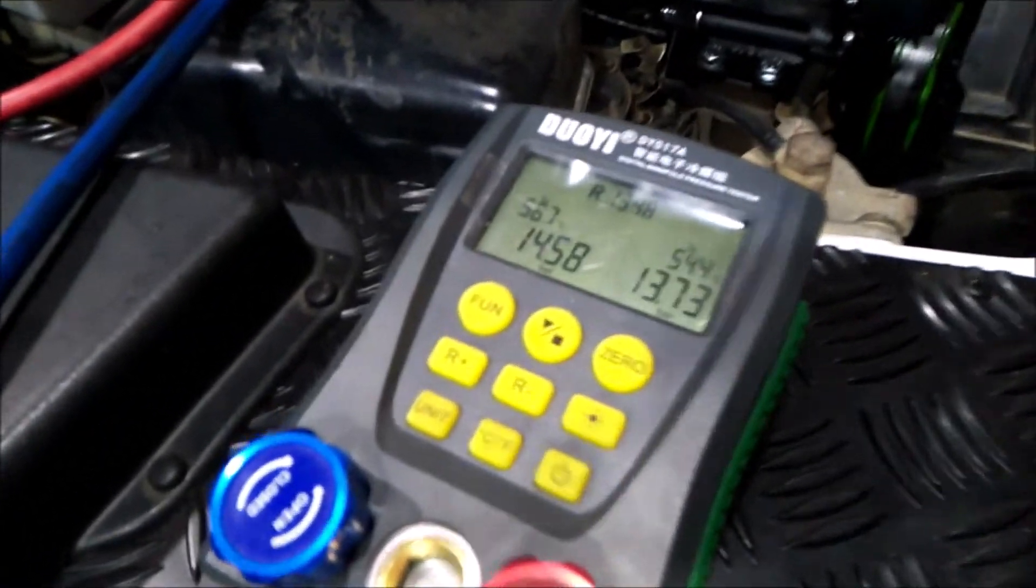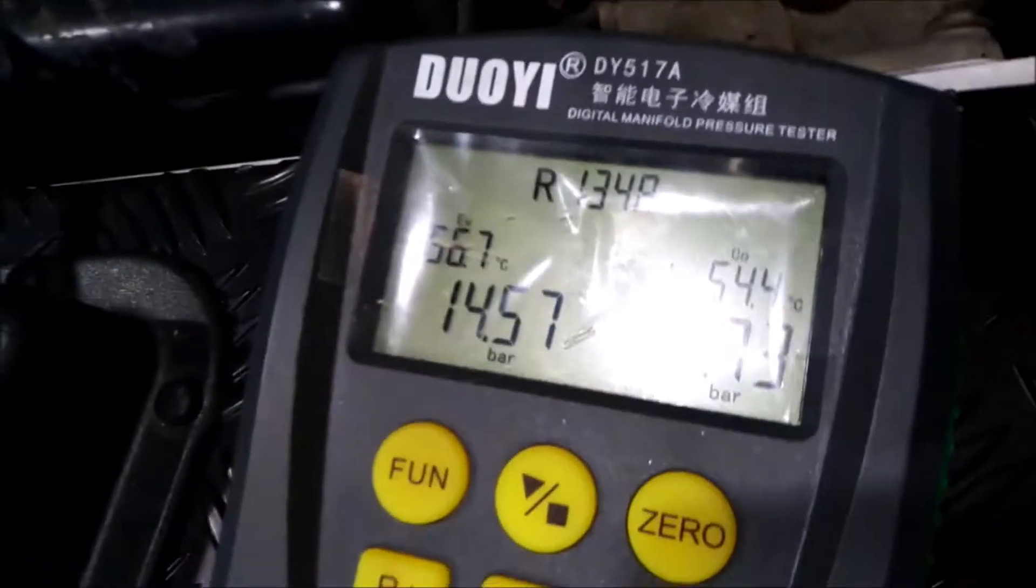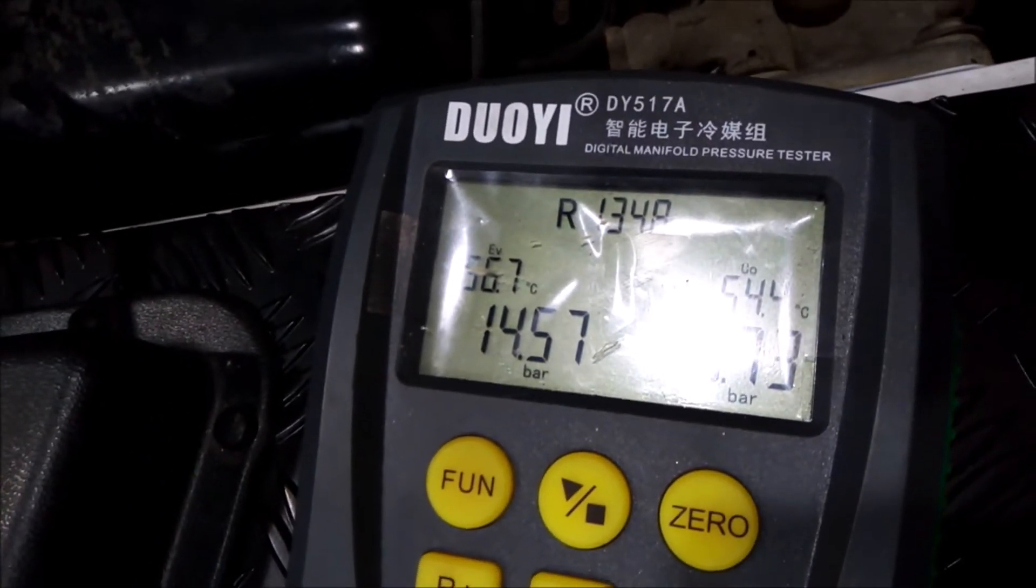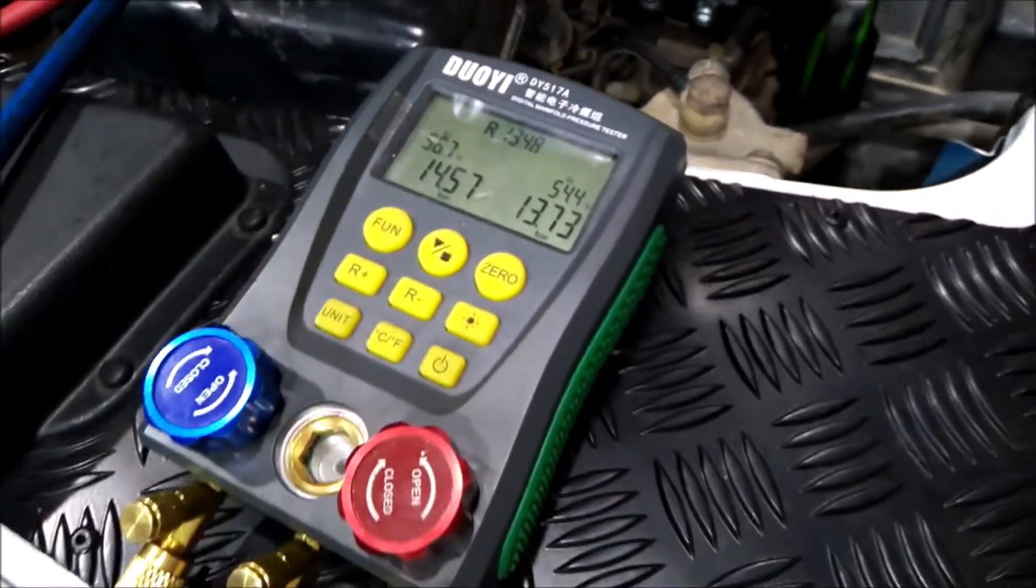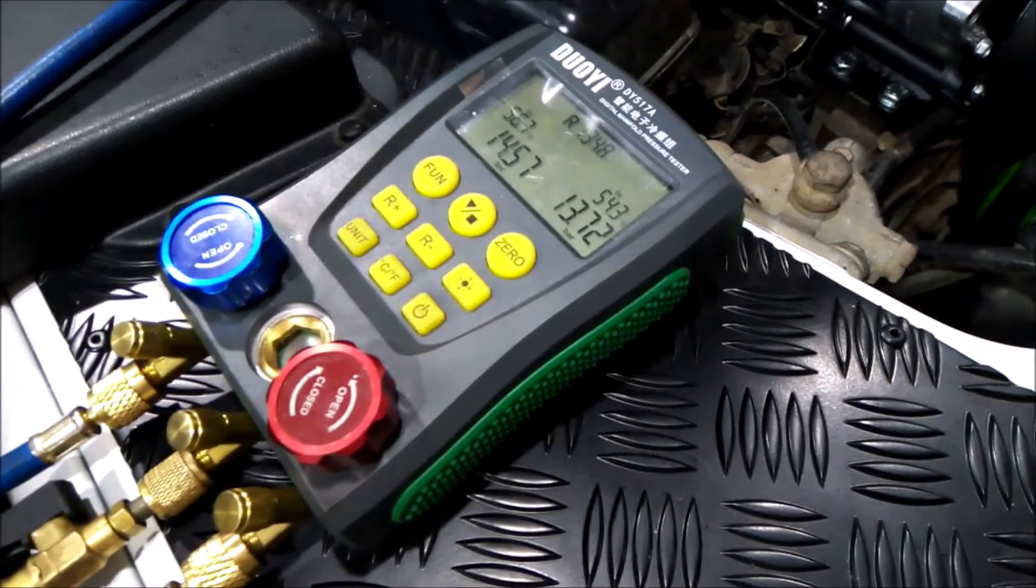So the first thing we do always is a nitrogen pressure test. This simulates high pressure loads under normal working conditions. This is to test your pipes and joints to see if anything is going to blow off or cause problems.